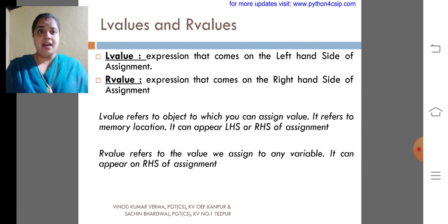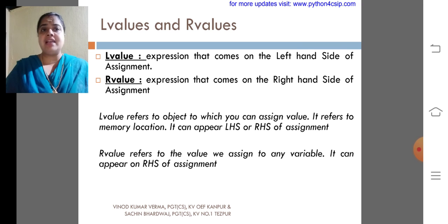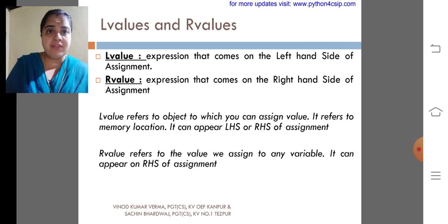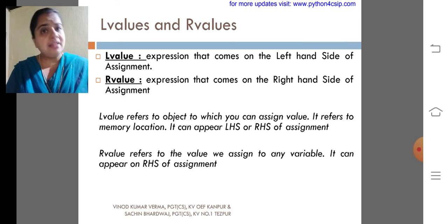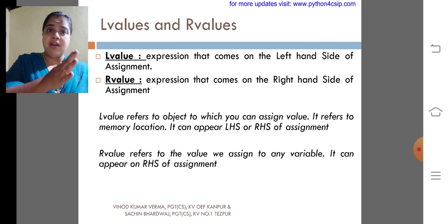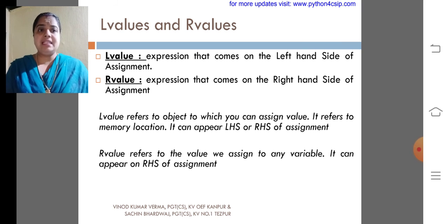L values and R values. Expression that comes on the left-hand side of assignment. L value, the expression that comes in the left-hand side of an assignment operator. What is assignment operator? That we already studied. Nothing but equal to. And R value means the expression that comes the right-hand side of the assignment. L value refers to the object to which it can be assigned a value. It refers to a memory location. It can appear LHS or RHS of assignment.